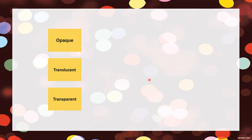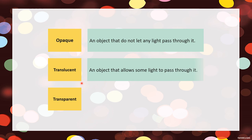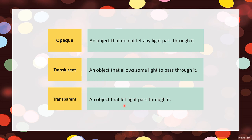The clarity of shadows depends on the type of material. There are three types of materials: opaque, translucent, and transparent. This is not in your textbook — it's general information that you will actually learn in Year 4. An opaque object does not let any light pass through it. A translucent object allows some light to pass through it. A transparent object lets light pass through it completely.